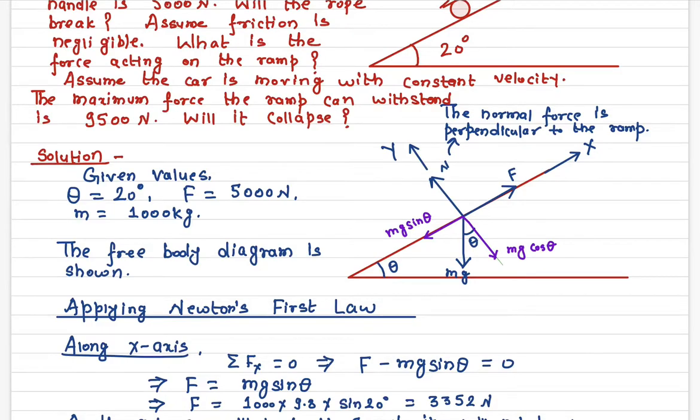So just to make life easier, we're choosing the inclined plane as our X axis and perpendicular to that we call the Y axis. So this is our X coordinate and this is Y coordinate.